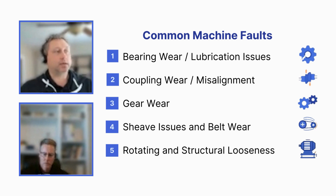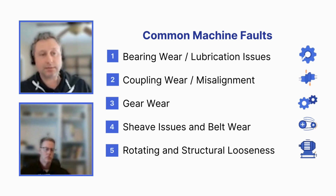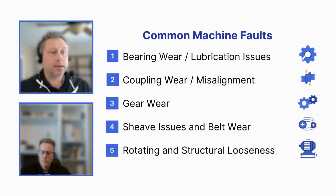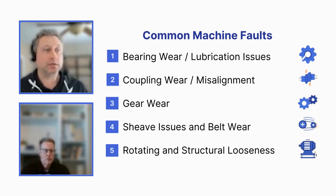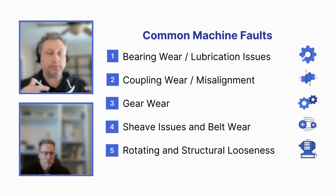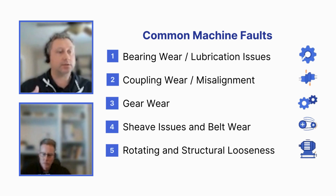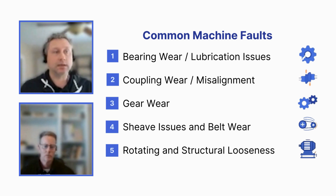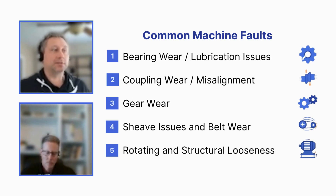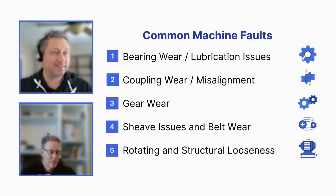Moving on to coupling wear: coupling wear and misalignment can have slightly different types of frequencies based on the machine design. In general, you want to look for high axial vibration — vibration in the direction of the shaft. Also, radial vibration at two times or three times the shaft speed are good indicators for coupling wear or misalignment. When coupling wear gets really bad, it can also look like rotating mechanical looseness.